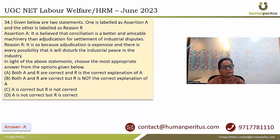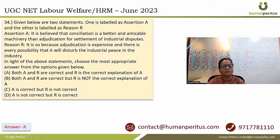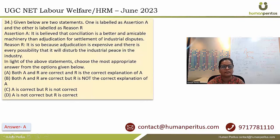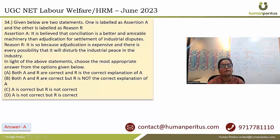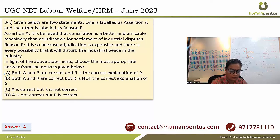An assertion and reasoning question states that conciliation is better and more amicable than adjudication for settlement of industrial disputes, because adjudication is expensive and could disturb industrial peace. Conciliation promotes harmony and is less destructive in nature. Both A and R are correct and R is the correct explanation of A. Answer is option A.